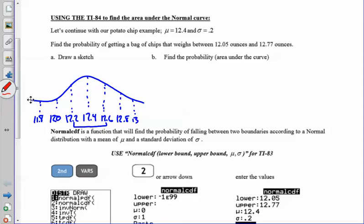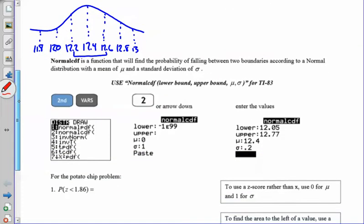But in this example, where we're trying to figure out 12.05 and 12.77, in those types of situations, those aren't nice z-score numbers per se. They're not negative ones, they're not positive two. They're going to be more of a decimal answer. So we're going to have to find the probability, or also known as the area under the curve, and we're going to have to use the calculator.